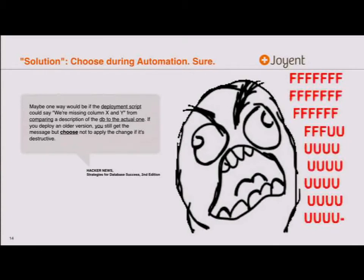One of my favorite comments in a thread talking about automation was someone saying, well, it's simple — you can just choose. But in automation there's no immediate escape hatch every time there's a decision point to go and talk to a human. That's not automation.